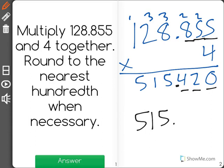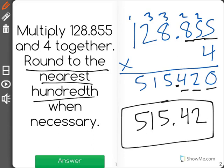And my correct answer will be 515.42 because it said to round to the nearest hundredth. Giving us 515.42.